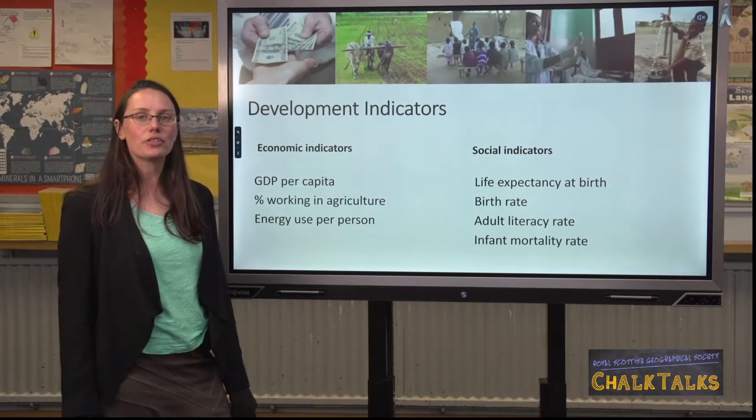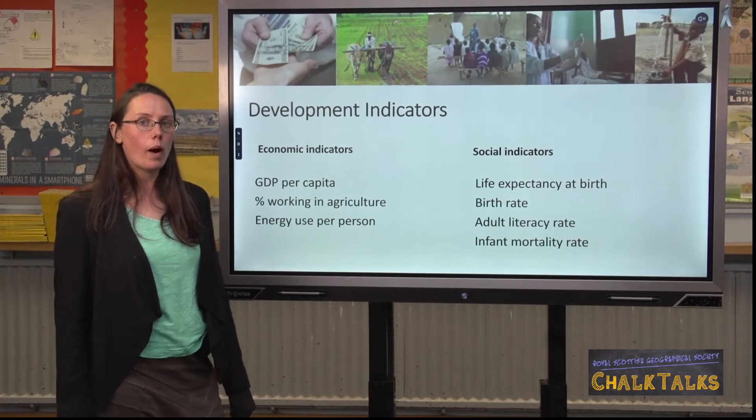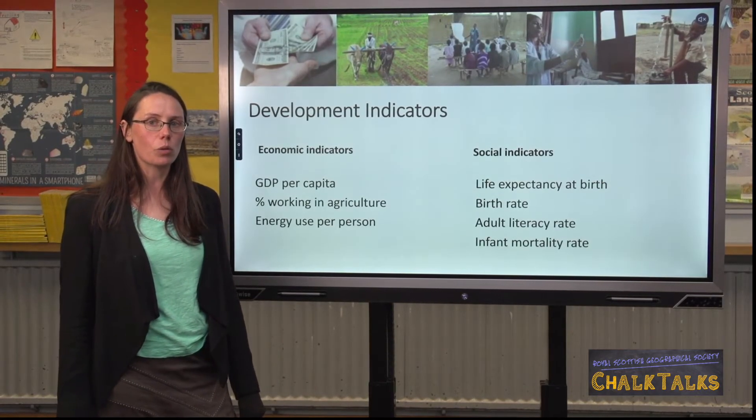When we talk about development in geography, we mean how economically, culturally, socially and technologically developed a country is. Generally, in a developed country you'd expect most people to have a high quality of life. Quality of life is a difficult thing to measure and quantify, so development indicators are things we can measure that give an indication of the quality of life in that country. For higher geography you need to be able to explain why these measures give an indication of quality of life.